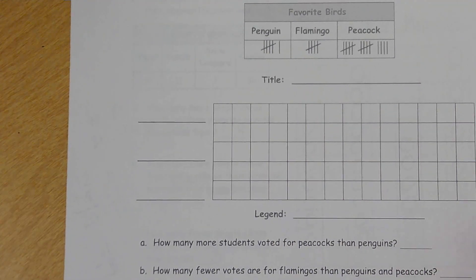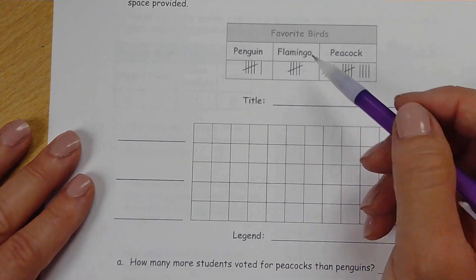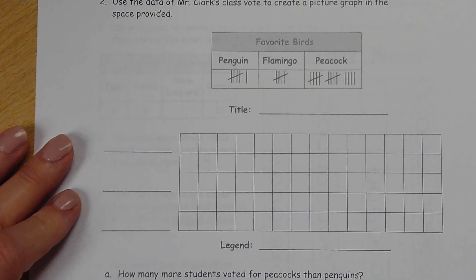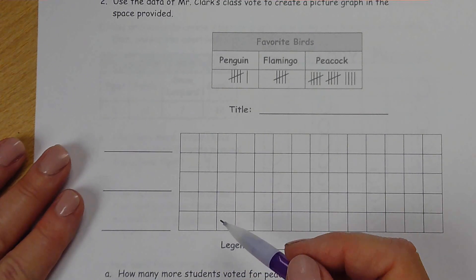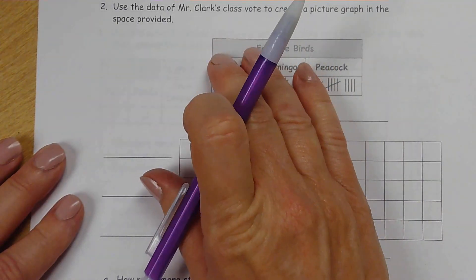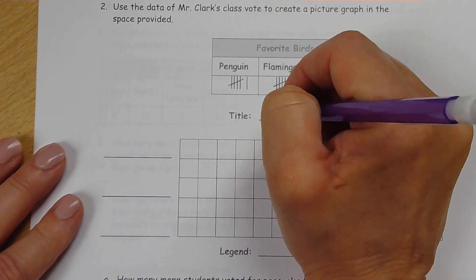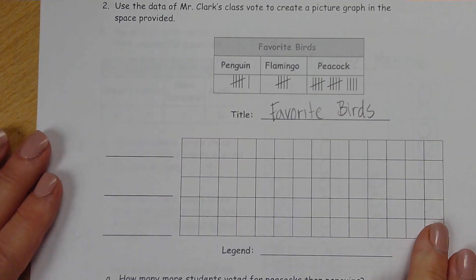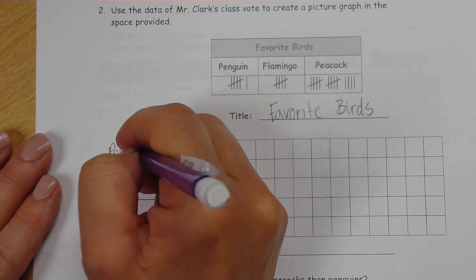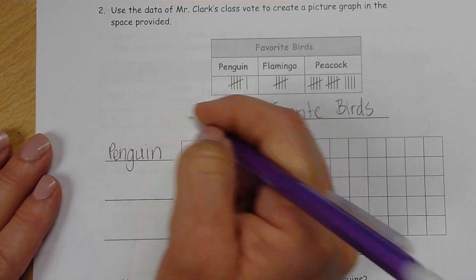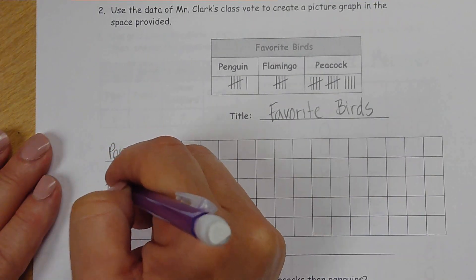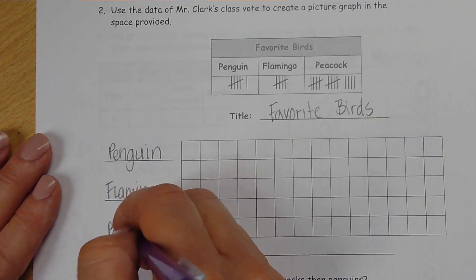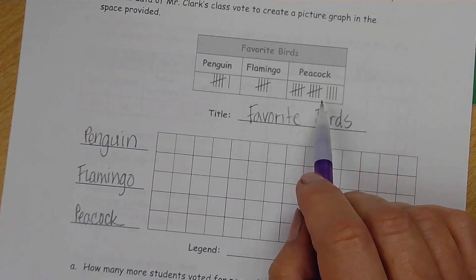This time we are talking about students who like... these are their favorites. They liked penguins, flamingos, peacocks. When we're drawing our picture, we could do a face if we want to this time, instead of just a circle. We have to label our graph. The title of the table is Favorite Birds. And then the three different birds: there's a penguin, a flamingo, and the last one is peacock. Wow, a lot of people liked peacock.